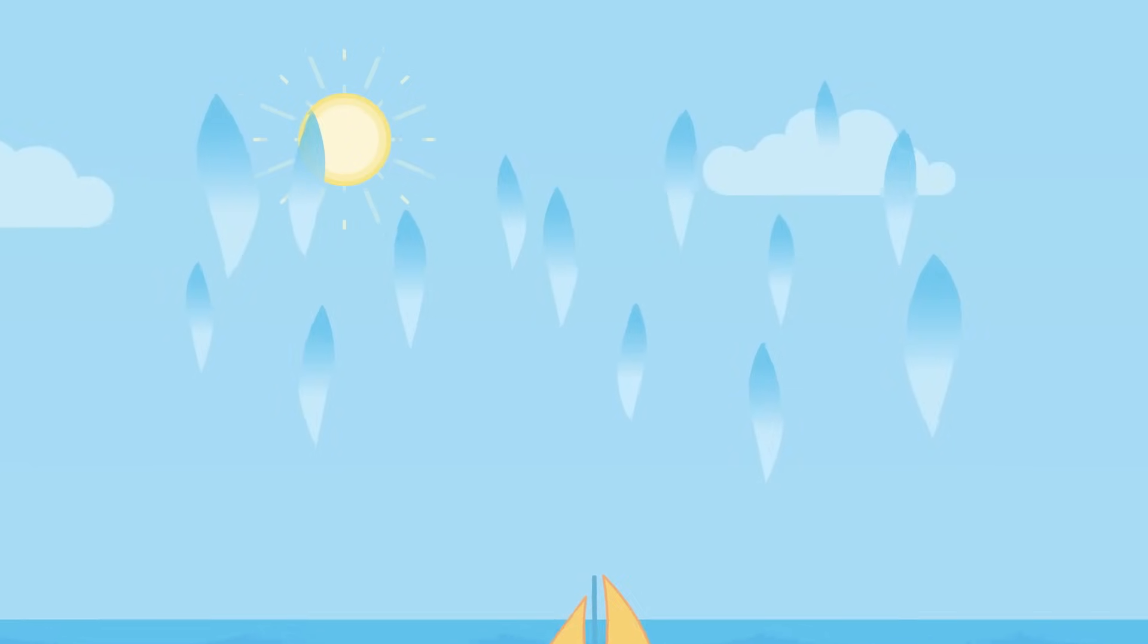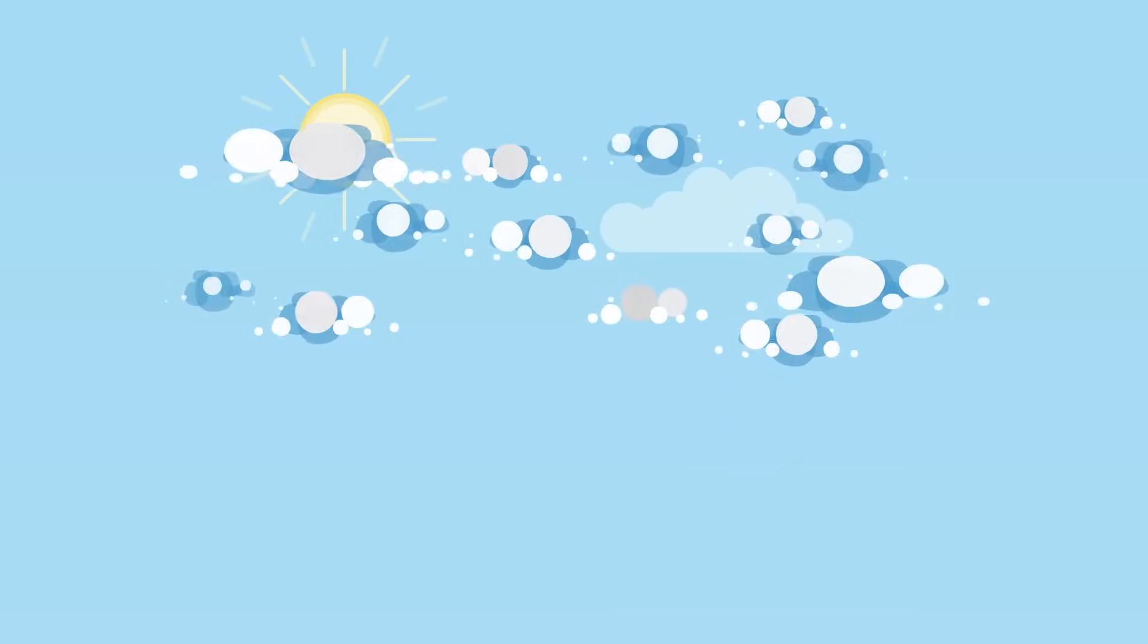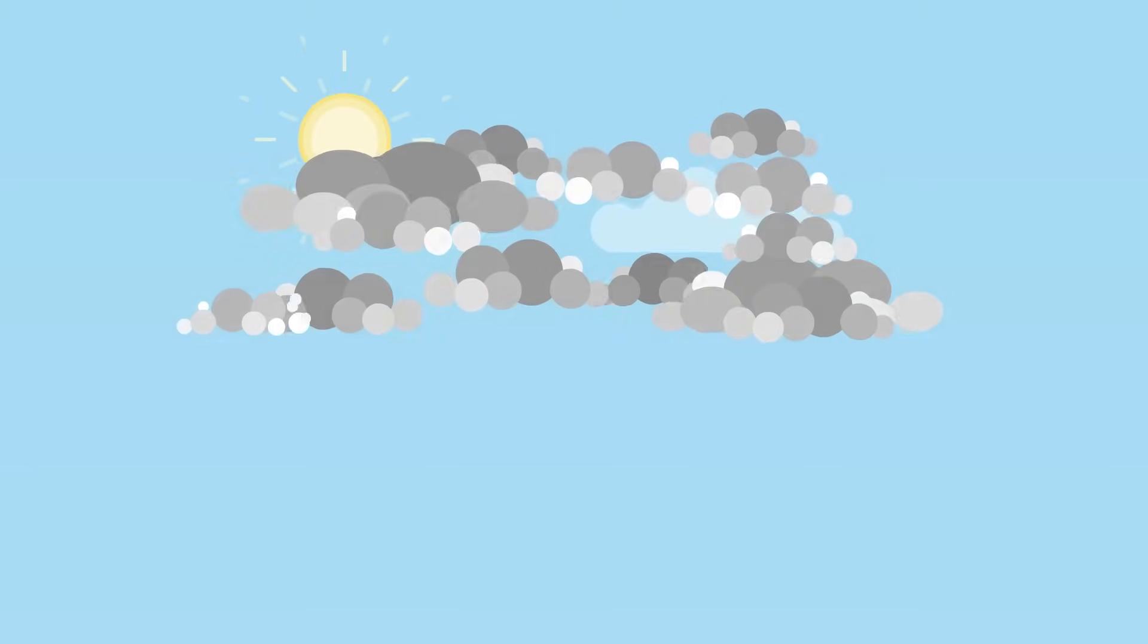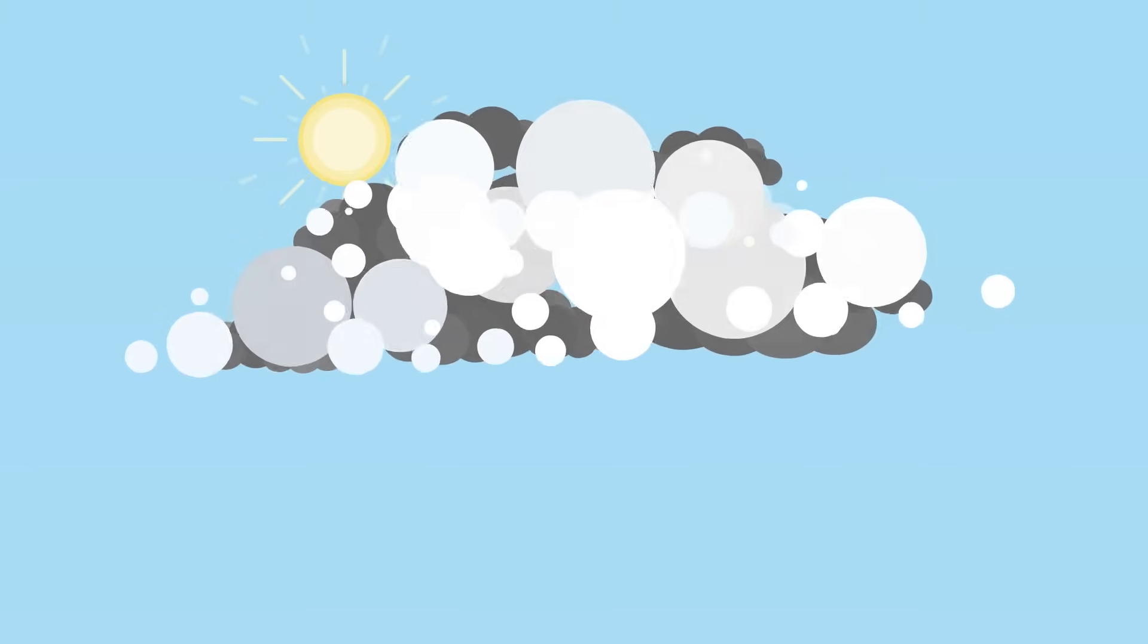As the water vapour moves up higher and higher into the sky, it starts to cool down, turning back into tiny droplets of liquid water. This is known as condensation and is what causes clouds to form.